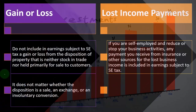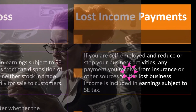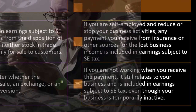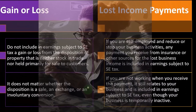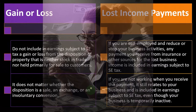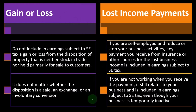Regarding lost income payments: if you are self-employed and reduce or stop your business activities, any payments you receive from insurance or other sources for the lost business income are included in earnings from self-employment, because it's still business-related. Even if you are not working when you receive the payment, it still relates to your business and is included in earnings subject to self-employment tax.